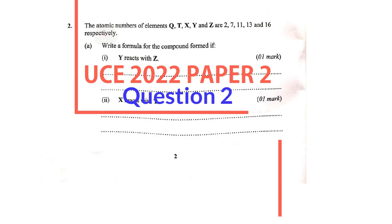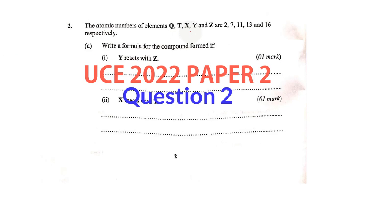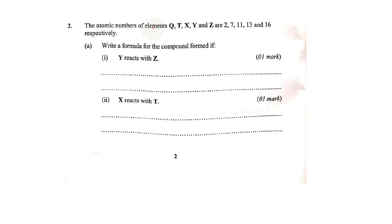Hello, let us now have a look at question 2 of UNRBCE 2022. The atomic numbers of elements Q, T, X, Y and Z are 2, 7, 11, 13 and 16 respectively.